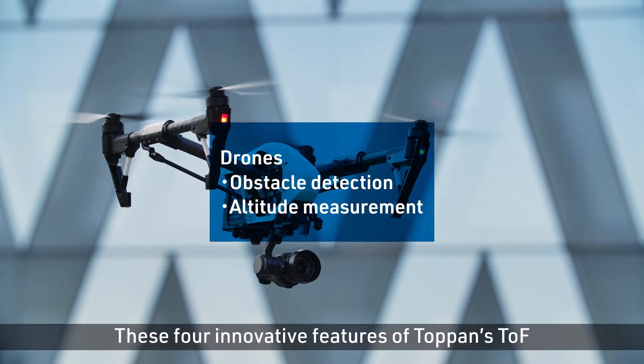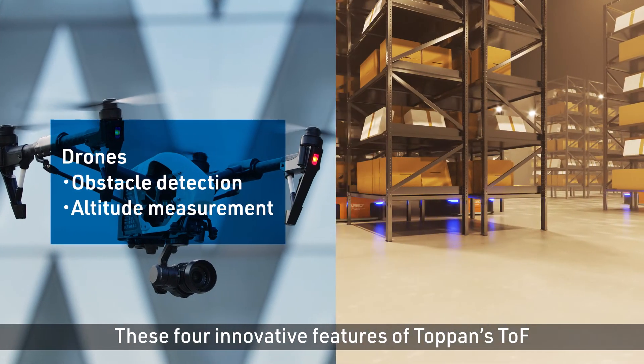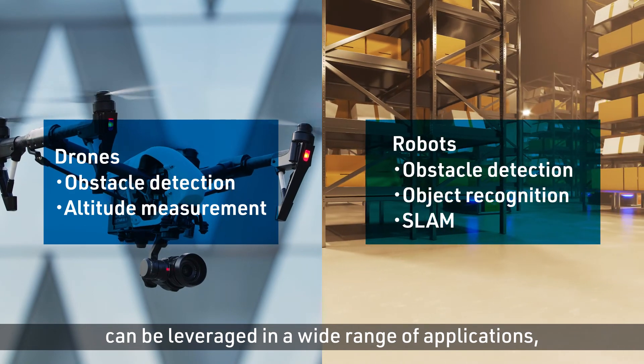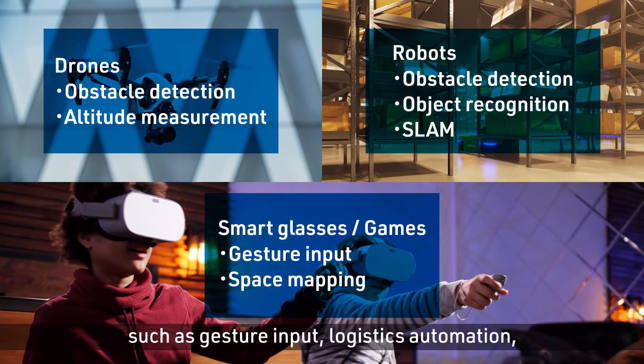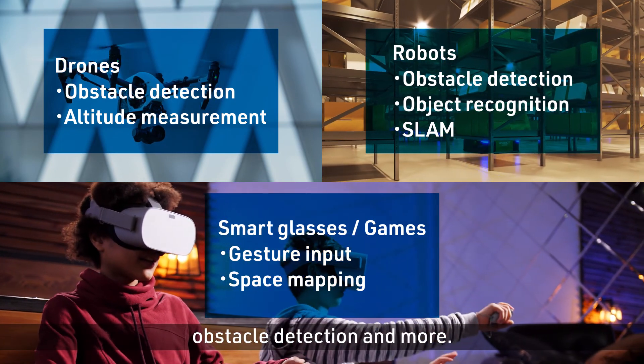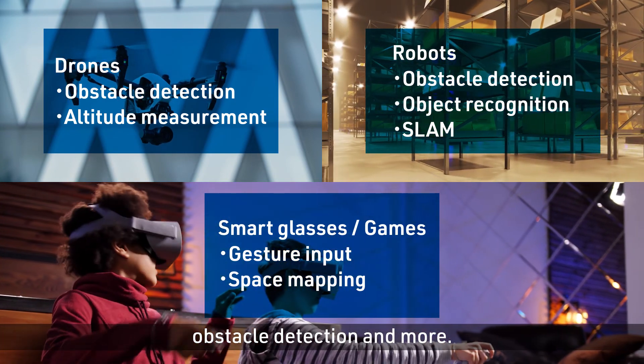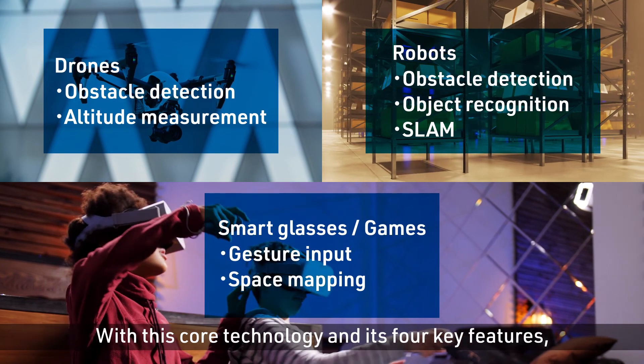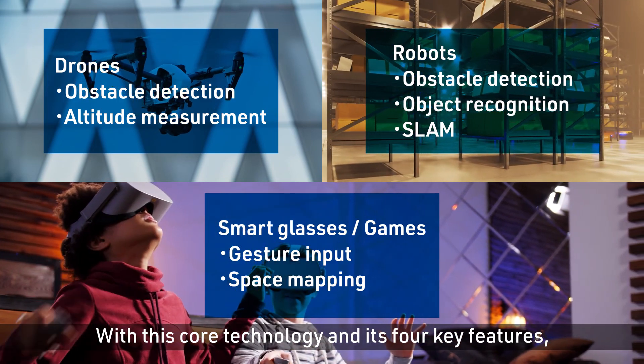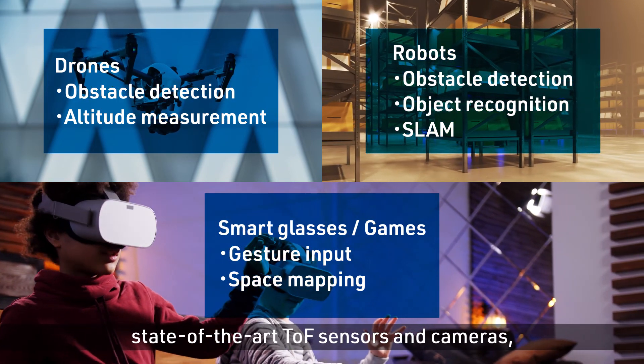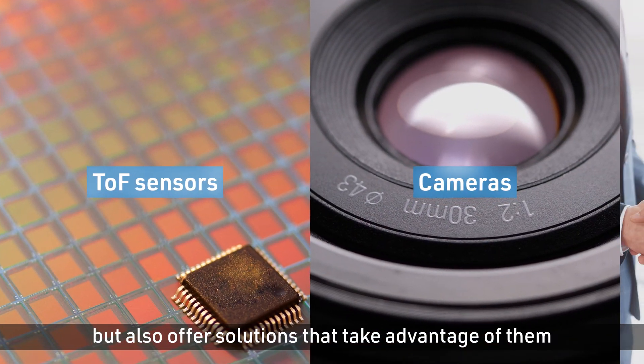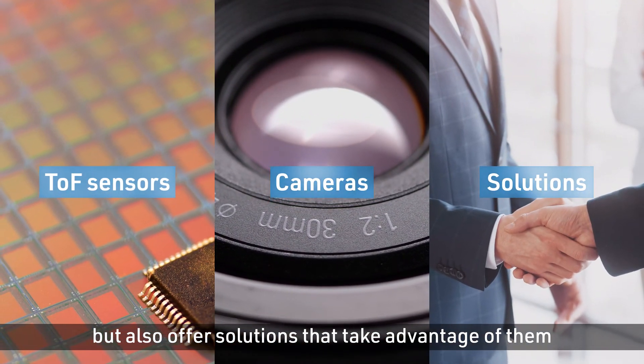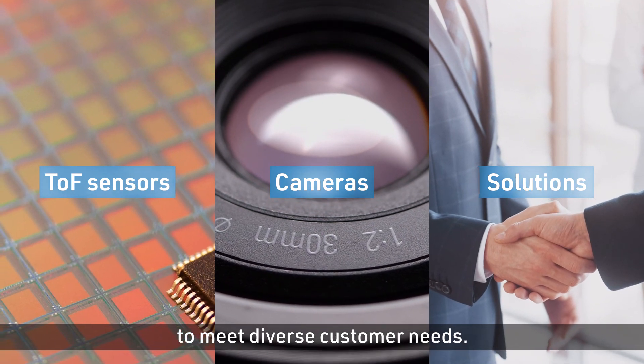These four innovative features of Toppan's TOF can be leveraged in a wide range of applications, such as gesture input, logistics automation, obstacle detection, and more. With this core technology and its four key features, Toppan will not only provide state-of-the-art TOF sensors and cameras, but also offer solutions that take advantage of them to meet diverse customer needs.